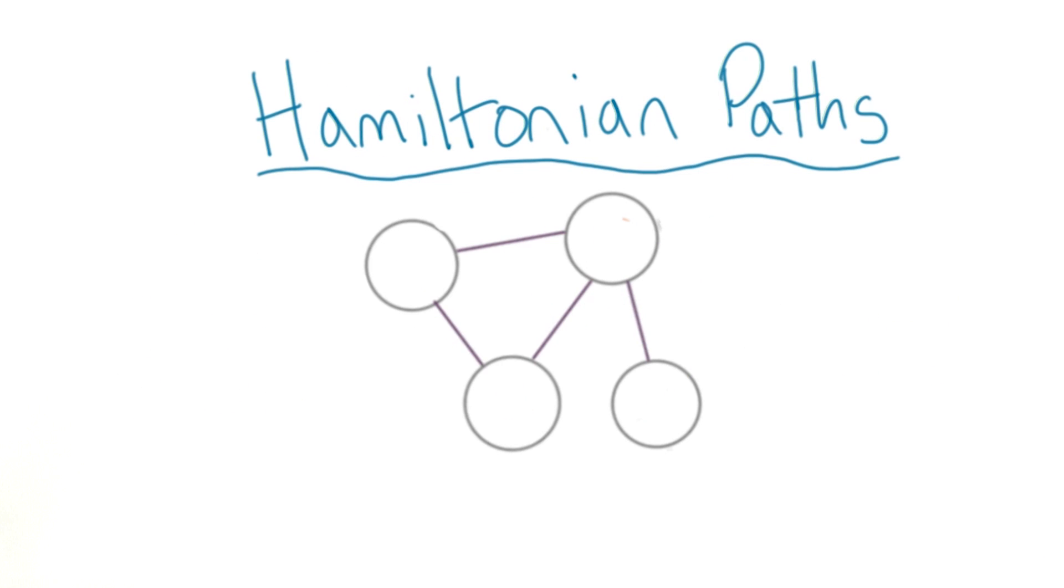A Hamiltonian path is another type of path that must go through every vertex once. Similarly, a Hamiltonian cycle will start and end with the same vertex.